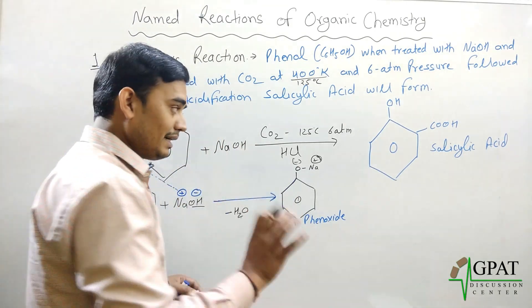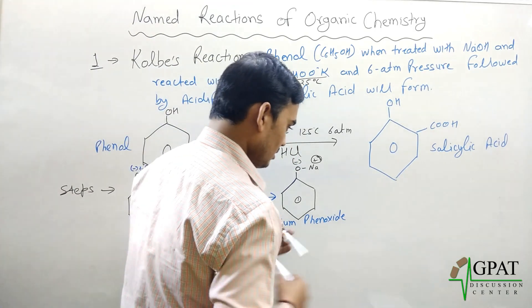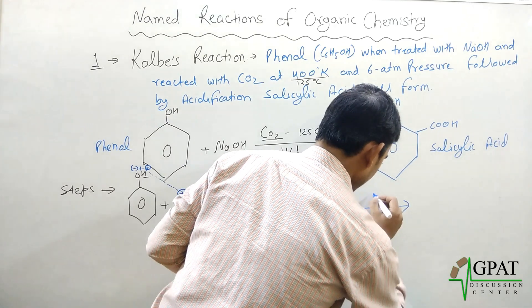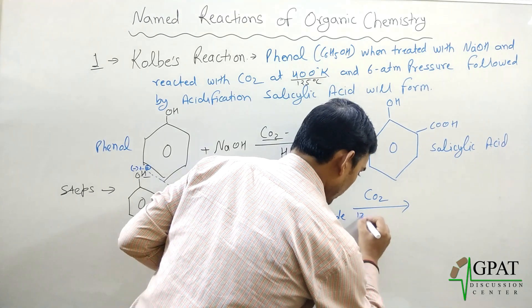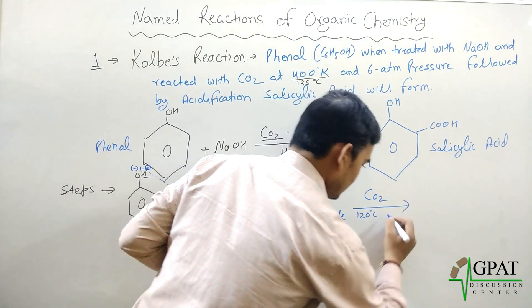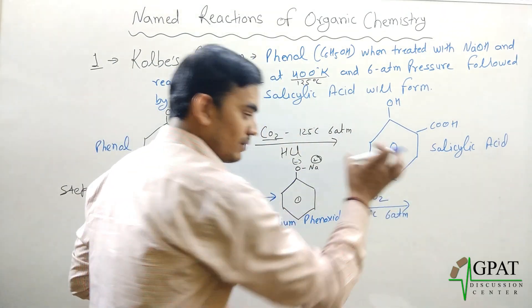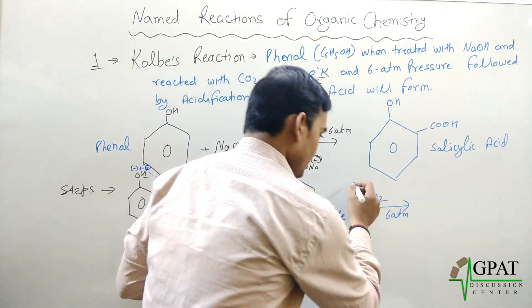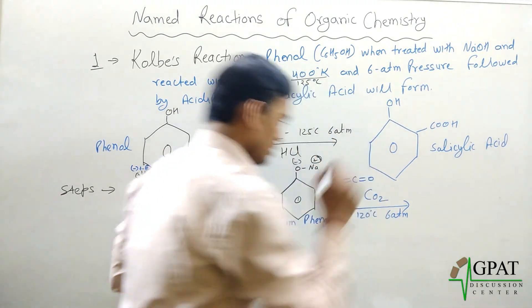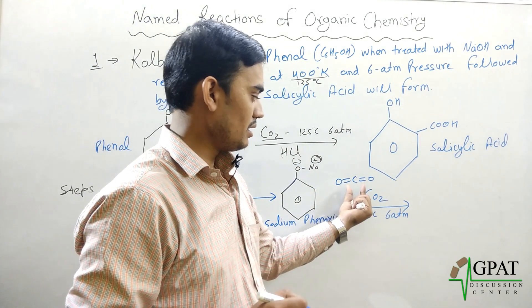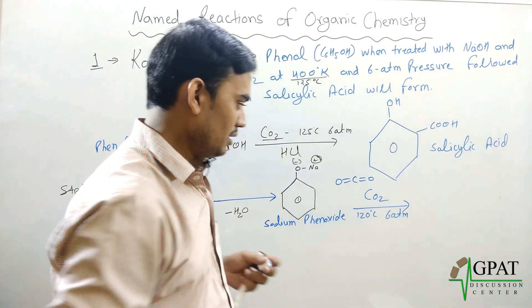Next, the sodium phenoxide compound is again treated with carbon dioxide at 125 degrees Celsius and 6 atmospheric pressure. The actual structure of carbon dioxide has a symmetrical arrangement: oxygen–carbon–oxygen with a double bond on each side.